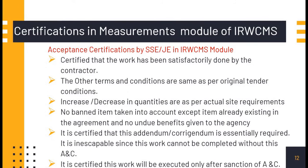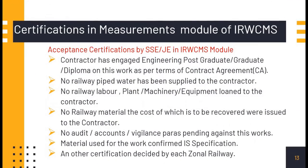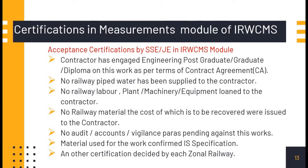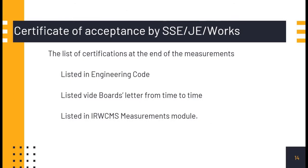Regarding certifications: after writing the 10-line abstracts and measurements, we give certifications. There are 12 standard certifications in the IRWCMS module. Some may be applicable in certain railways and not in others. Beyond these 12, there may be additional certifications in practice in some railways — for those, there is a 13th option labeled 'Any other,' where we can enter our railway's pattern of certifications. The list of certifications is given in the Indian Railway Engineering Code and through Railway Board letters, and is listed in the IRWCMS measurements module.